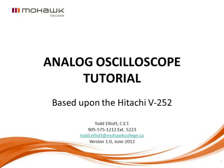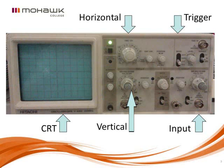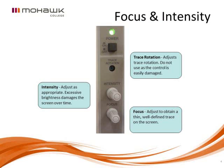This is Professor Todd Elliott, and today we are going to look at the basics of setting up the analog oscilloscope. The major oscilloscope controls are subdivided into two sections: the horizontal and the vertical. The horizontal control determines the XY settings of the oscilloscope. You have the trigger, and the vertical controls the volts per division and vertical settings.